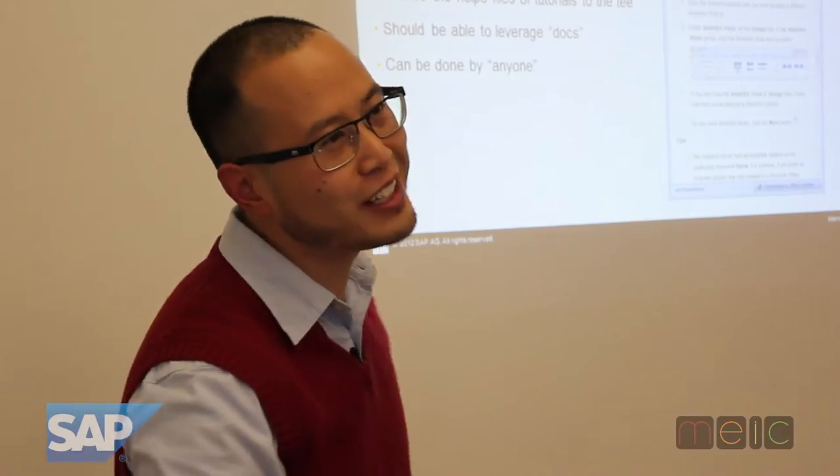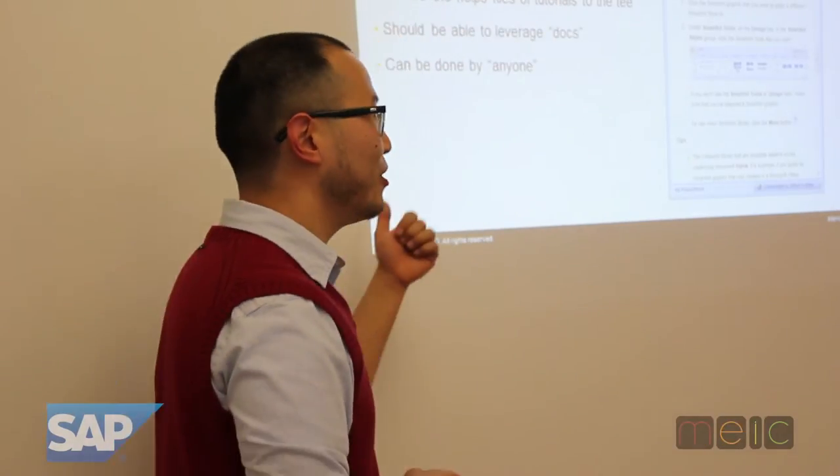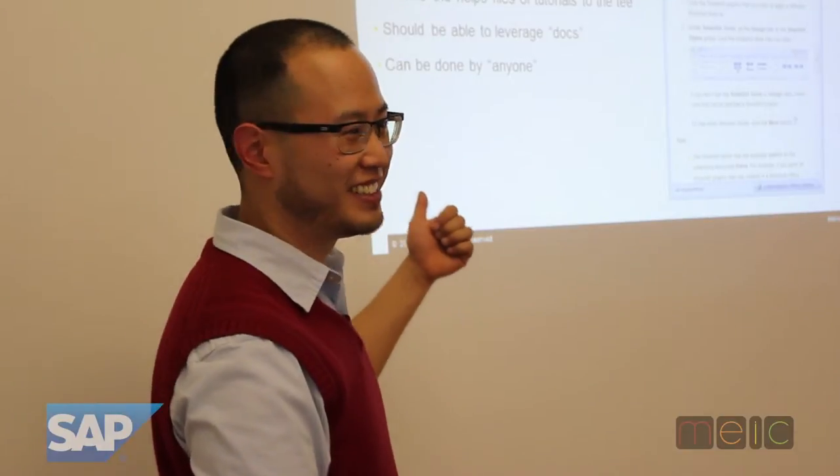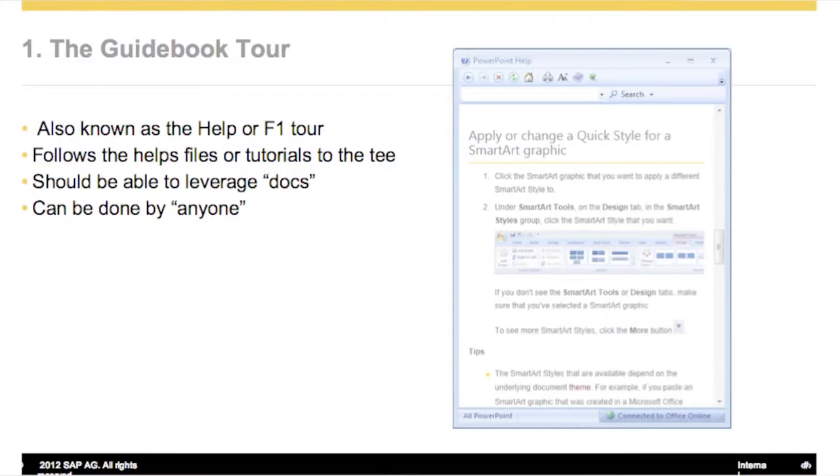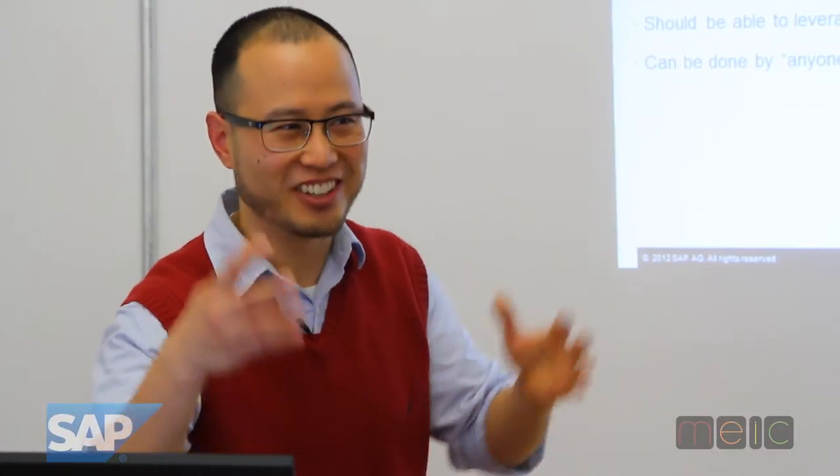The first one is the guidebook tour, also known as the helper F1 tour. The idea is that you're following the steps of the tutorial to the T. It's sort of a rework of the happy path. You're going for the guidebook — and in a way you're also testing the guidebook itself. You're going the happy path; F1 Help rarely says 'if you press Alt-D right now, the system will crash.' They're telling you things like go here, go here, go here.